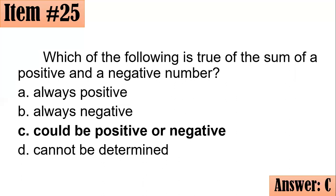If the sign of the number with the greater absolute value is negative, then the answer is negative. But if the sign of the number with the greater absolute value is positive, then it is also positive. However, if they have the same absolute value and they have opposite signs, it could be zero as well. So we will go with letter C. That's the best answer here.